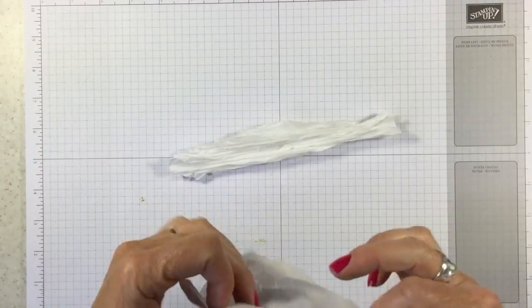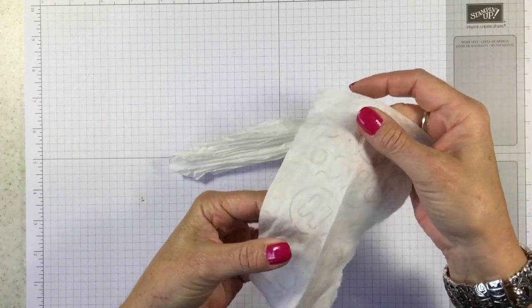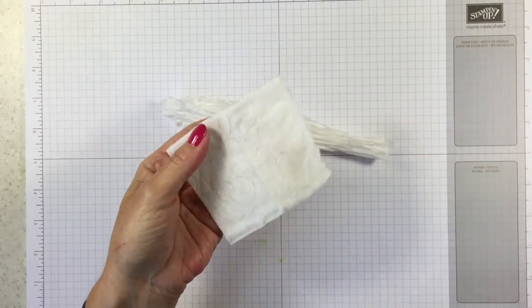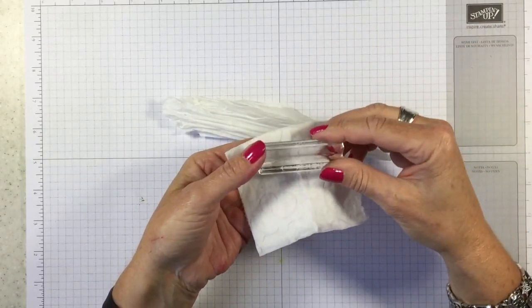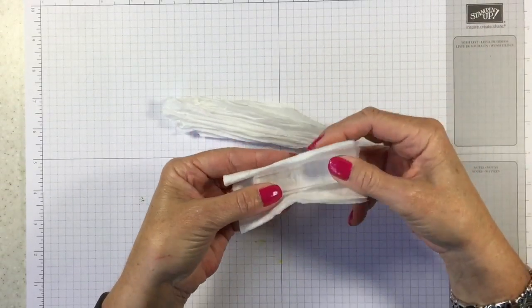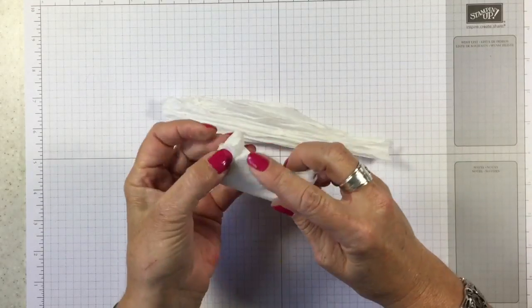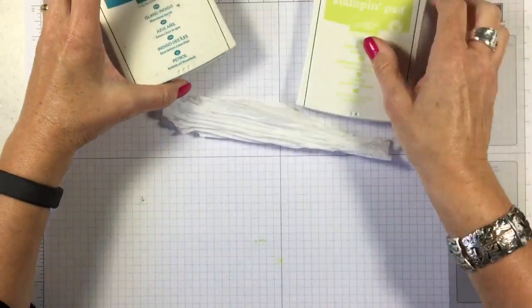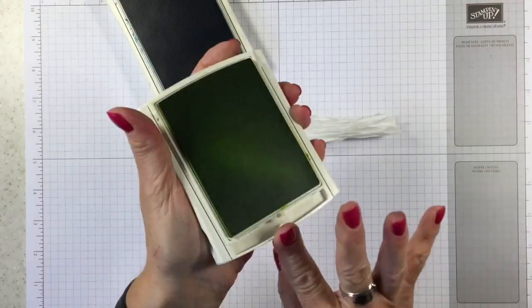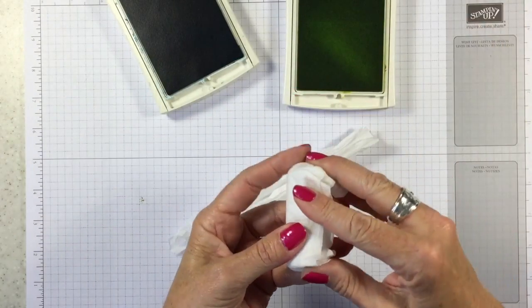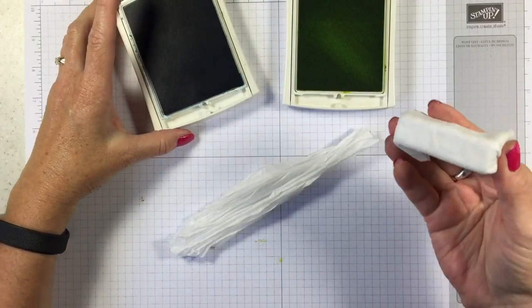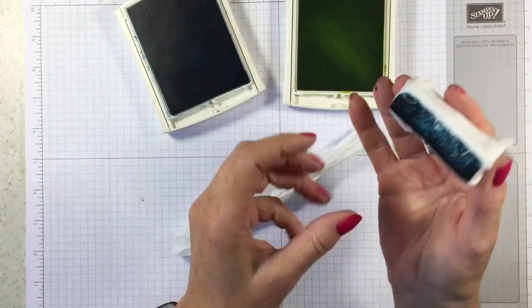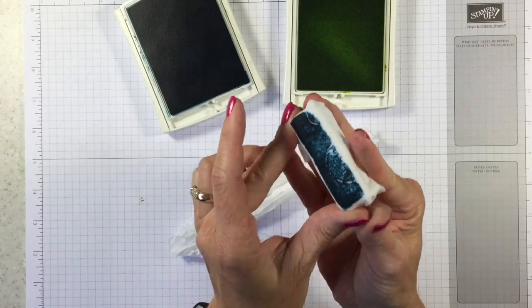Next we're going to take baby wipes. I've taken this baby wipe and I've just torn it in half because I don't need a whole baby wipe. So I like to use a block because it helps keep my fingers clean. I've just got our G block and I am just going to wrap this in my baby wipe just like that. And then we are going to use Lemon Lime Twist and Island Indigo ink for this particular tie-dye. I'm just going to start with the Island Indigo here and you're going to get your block inked up. Look I stuck my finger in it, you guys know that I can't do anything without being messy.